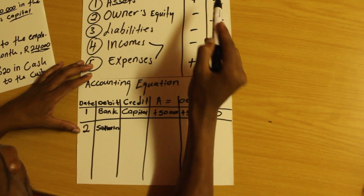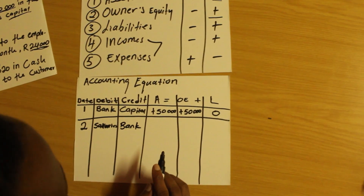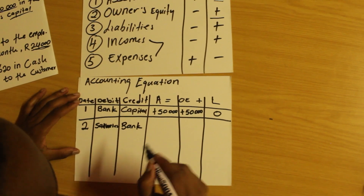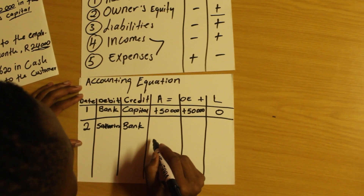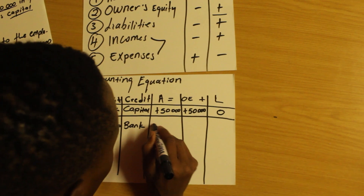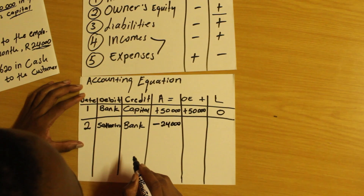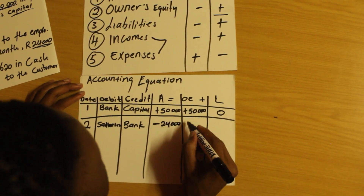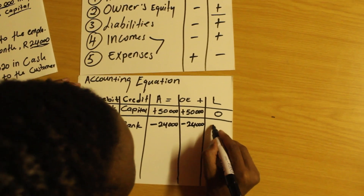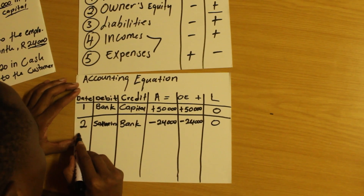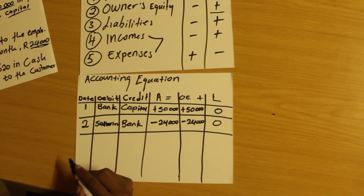We will credit bank because bank is an asset and it's decreasing — when an asset decreases, we credit it. Money is going out because we're paying our employees. When you do accounting, refer to yourself as the business you've been given. The asset is decreasing, so I'll say minus 24,000. Salaries is an expense that decreases owner's equity, so minus 24,000. Zero liabilities for this transaction.